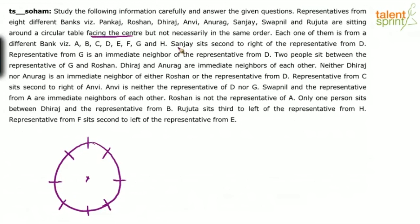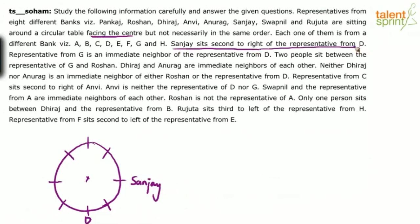Clue one: Sanjay sits second to the right of the representative from D. Since right is anticlockwise, if we place D at a position, going first and second anticlockwise gives us Sanjay's position. This is now fixed on our diagram.